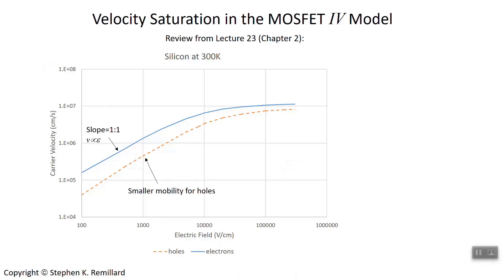Way back in chapter 2 we talked about a speed limit for carriers in a semiconductor. It's on the order of a hundred thousand meters per second, a little bit lower for holes than it is for electrons.